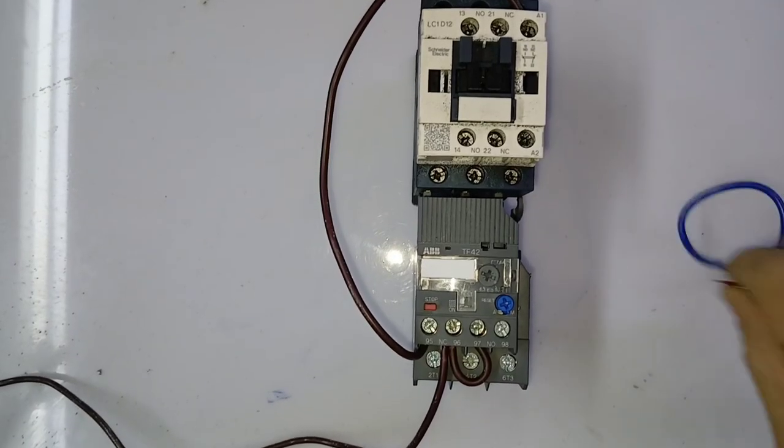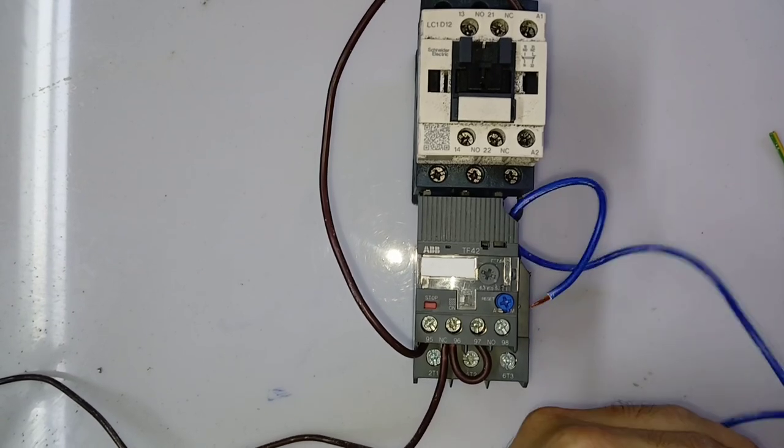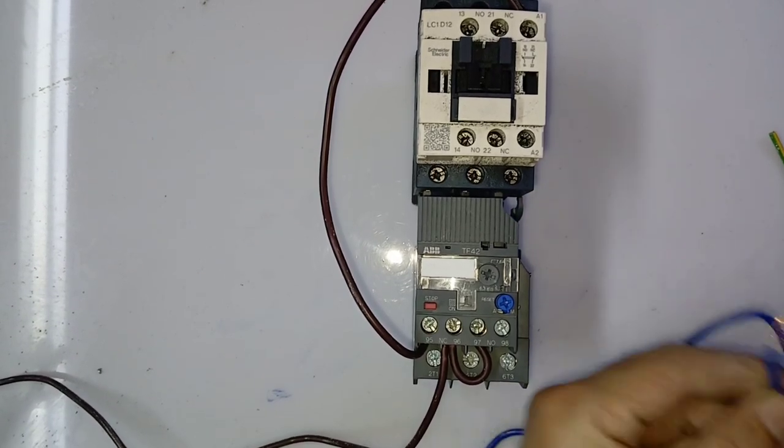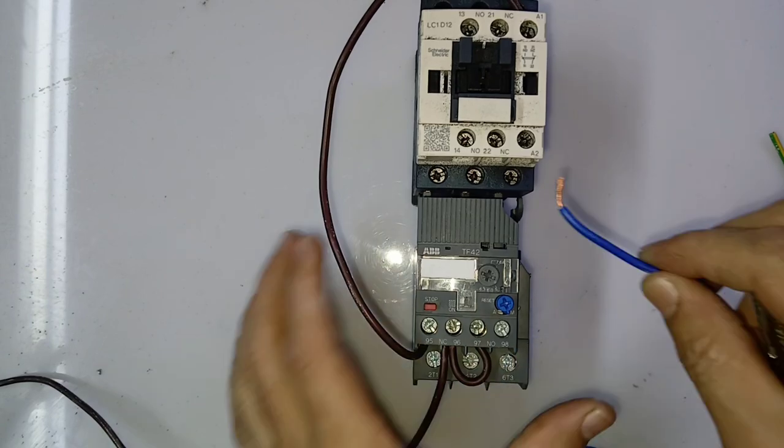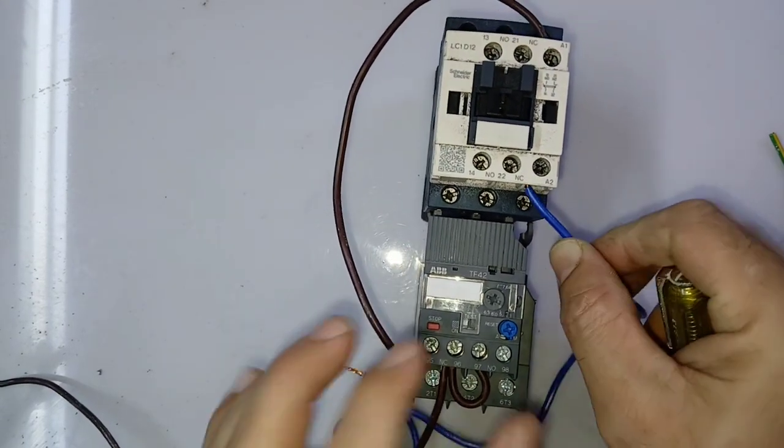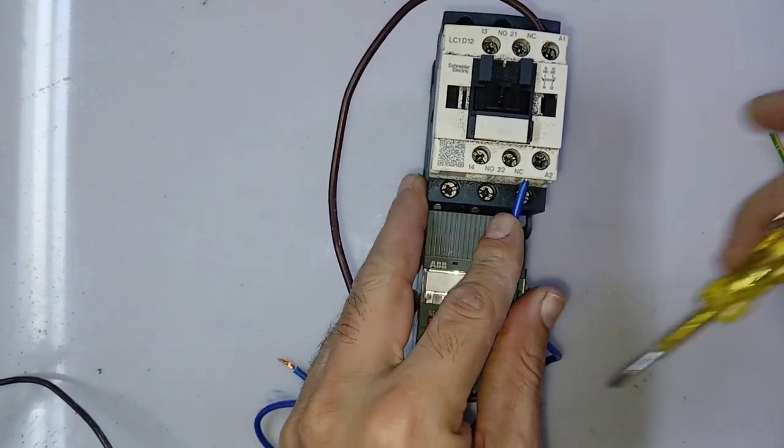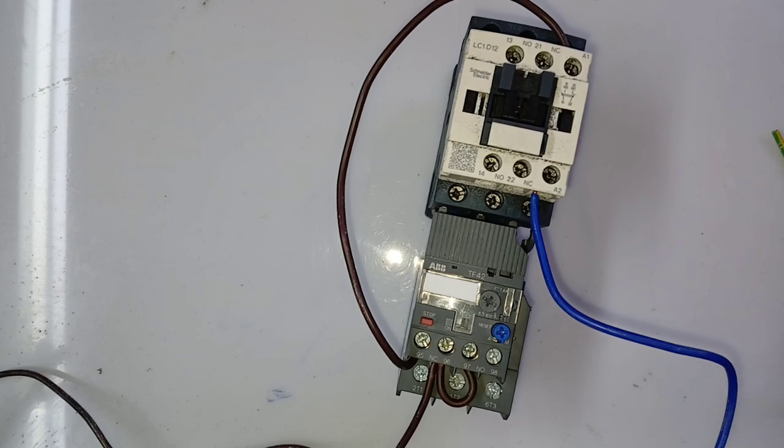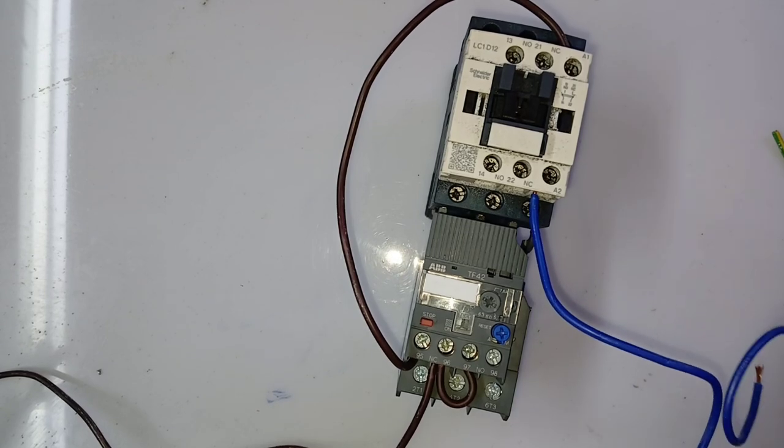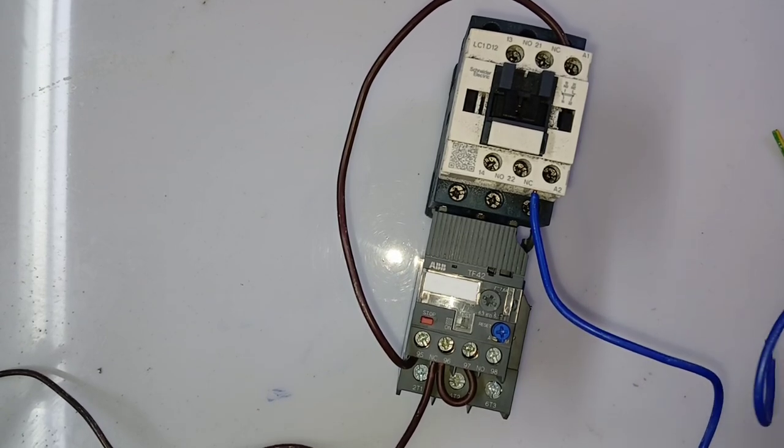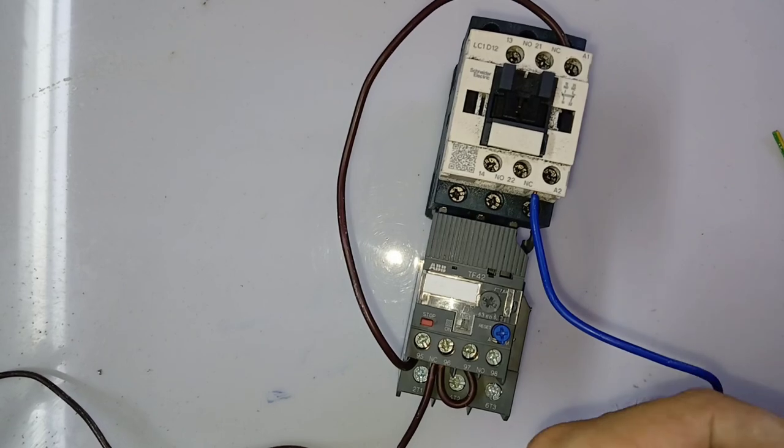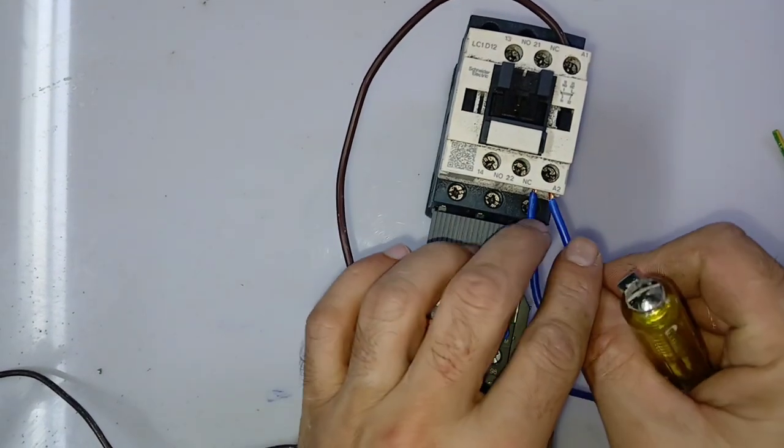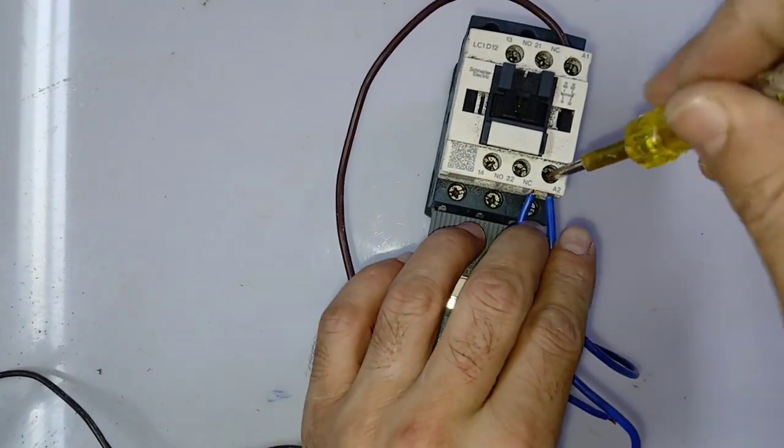So line is given. Now we will connect the neutral. Neutral cable will go to A2. And also we will connect one neutral for trip indicator. I will show you how the trip indicator works. Will connect one cable for trip indicator.